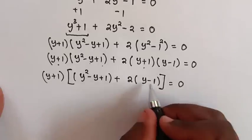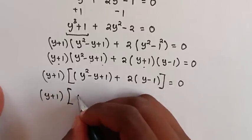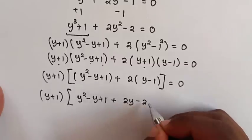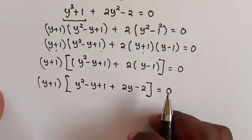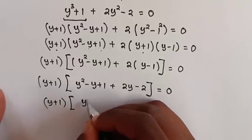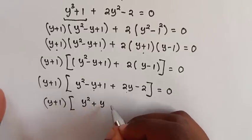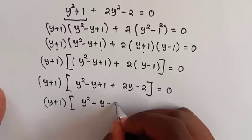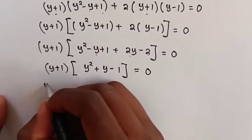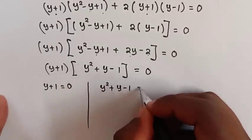Then we multiply 2 inside the bracket. So it will be (y plus 1) times (y squared minus y plus 1 plus 2y minus 2) is equal to 0. Then it will be (y plus 1) times (y squared plus y minus 1) is equal to 0. Then next step we have two cases: y plus 1 equals 0, and y squared plus y minus 1 equals 0.